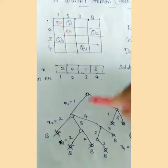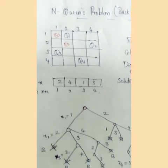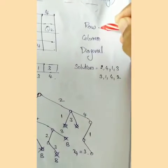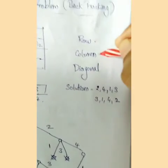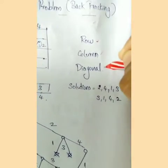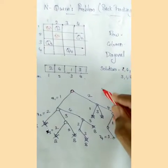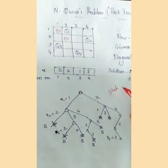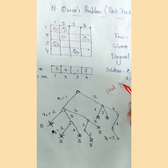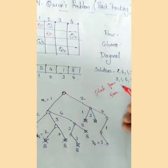In this case, we will consider placements row-wise and column-wise. We will use a state-space diagram to illustrate the backtracking solution.